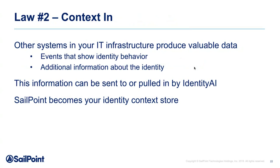Law number two: send context into your system. SIEM tools have events showing identity behavior. Privileged access management systems have information about who's using accounts. That information is extremely useful for detecting patterns. That can be sent to Identity AI — SailPoint's solution for applying artificial intelligence and machine learning to identity governance processes — or Identity AI can reach out into those systems and pull that data in. Identity AI becomes your central storage house for all identity context.